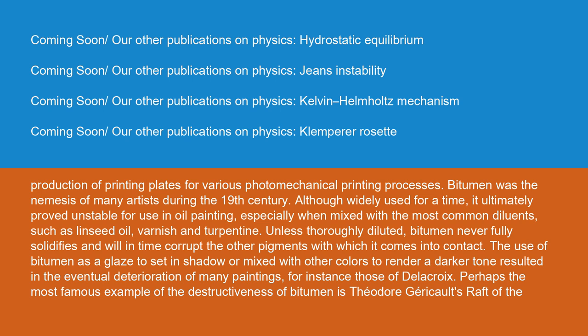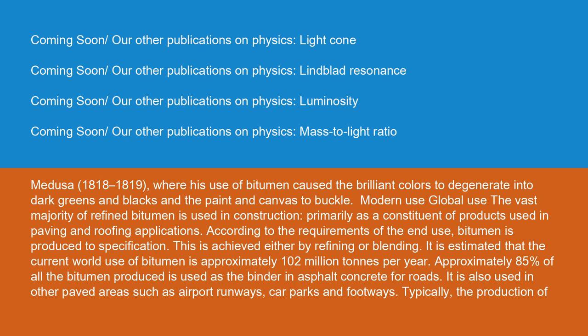Bitumen was the nemesis of many artists during the 19th century. Although widely used for a time, it ultimately proved unstable for use in oil painting, especially when mixed with common diluents such as linseed oil, varnish, and turpentine. Unless thoroughly diluted, bitumen never fully solidifies and will in time corrupt the other pigments with which it comes into contact. The use of bitumen as a glaze to set in shadow resulted in the eventual deterioration of many paintings. Perhaps the most famous example is Théodore Géricault's Raft of the Medusa (1818–1819), where his use of bitumen caused the brilliant colors to degenerate into dark greens and blacks and the paint and canvas to buckle.